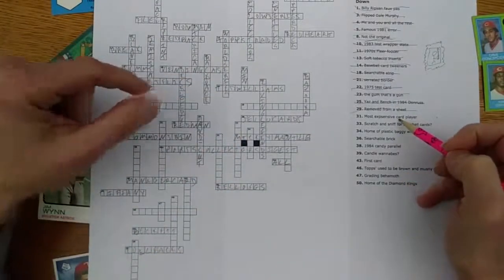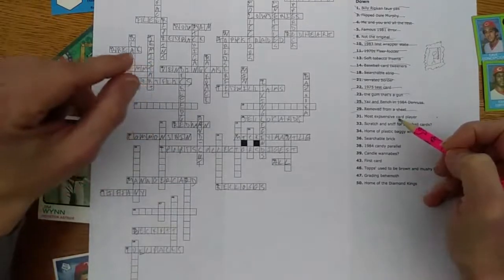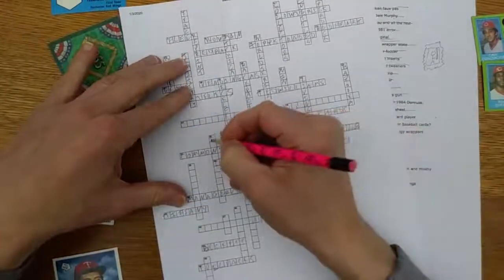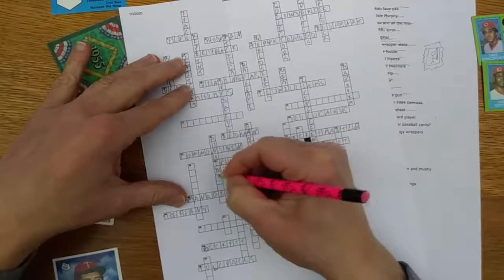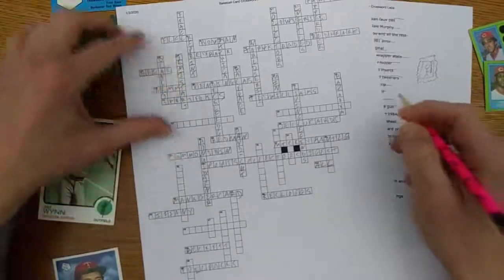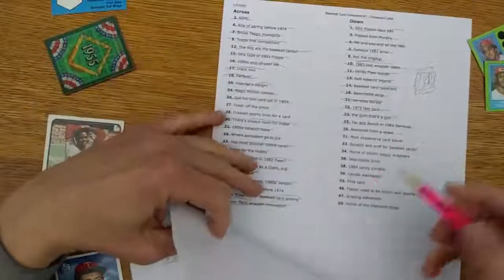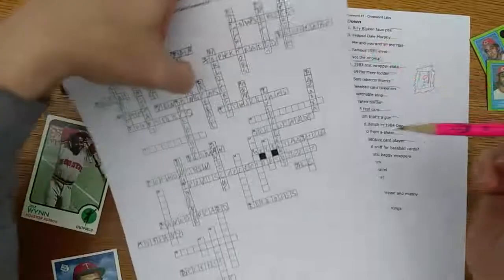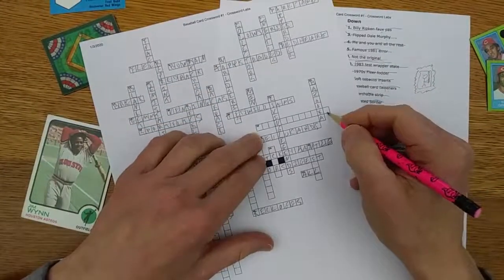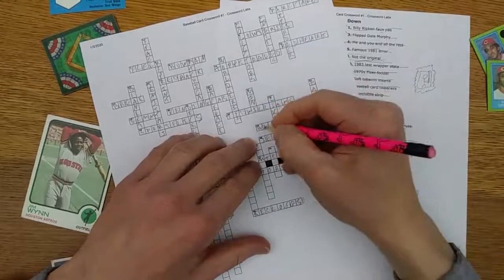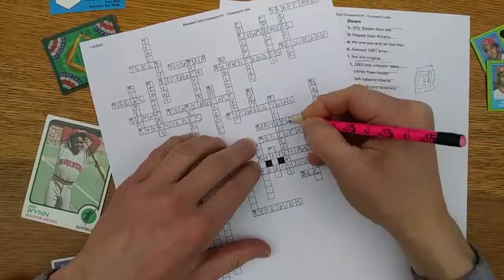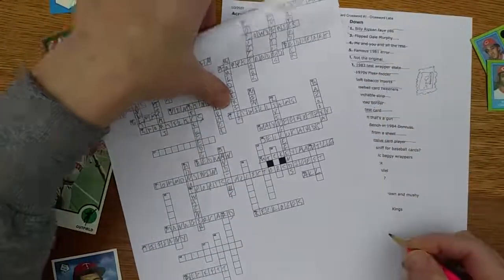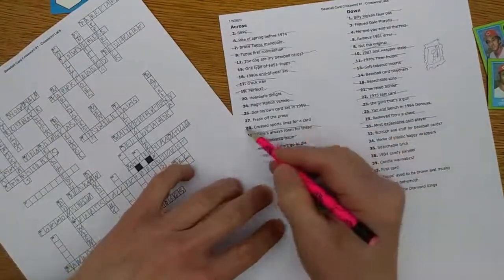We'll go back to get our downs. Most expensive card player: We will say that Honus Wagner still is the subject of the most expensive card, his T206 card. And that fits, and it also gives me an idea about the one crossing over. About crossing sports, 28 across, sports lines for a card: The most famous sale of a Honus Wagner card was to Wayne Gretzky. That looks like it's going to fit. The great one, the great hockey player. And it does fit. So that works.